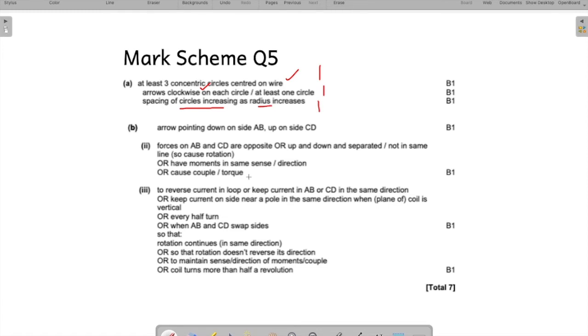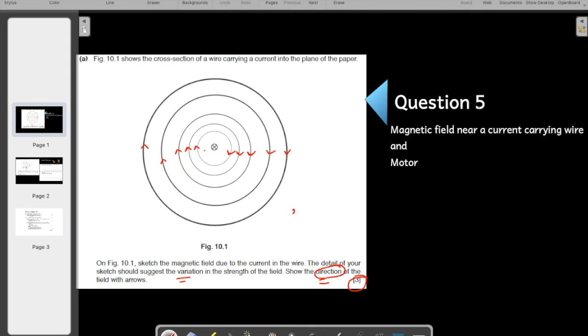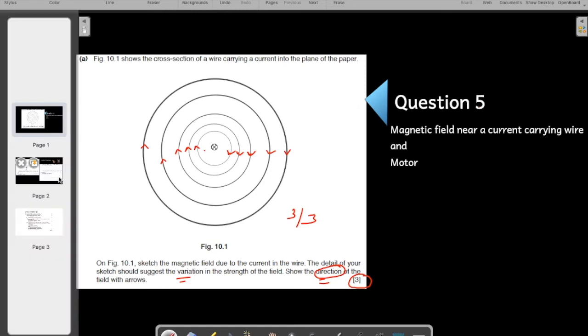Spacing of the circle is increasing as the radius is increasing. So, we have shown all the three points. So, we get all the three marks, three by three in this question. So, that is why I always keep saying that it is always a good idea to look at the marks that the question is carrying. It gives you an idea about how much of an information that you need to showcase in your answer.